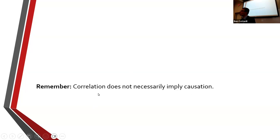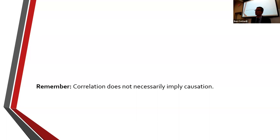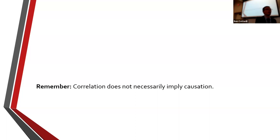Correlation doesn't mean causation. In some cases this doesn't matter — all we need to know is that some variables are related. Conscientiousness is related to university grades; it doesn't matter that we can't demonstrate causality. That reliable finding still tells us something useful — that these two variables are related, and gives insight into what makes one perform better at university.